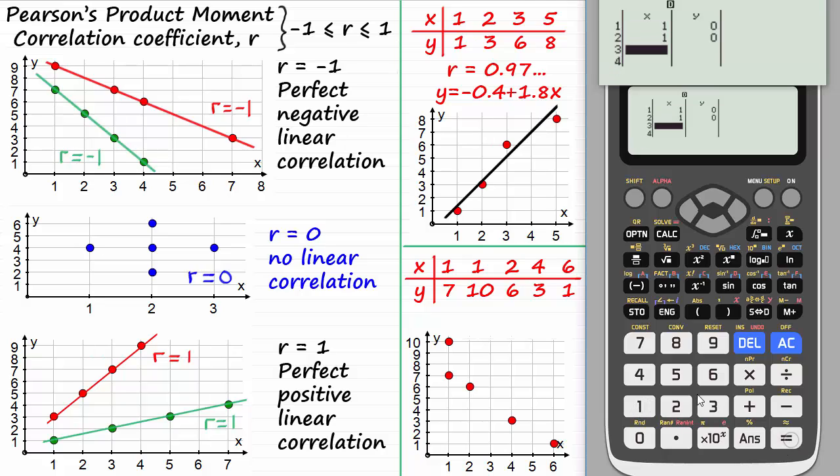That's one equals, one equals, two equals, four equals and six equals. Send the cursor down again and then across to the right. Now we just enter the value seven, ten, six, three and finally one. That's all our values into the table. I could check them just by sending the cursor up.